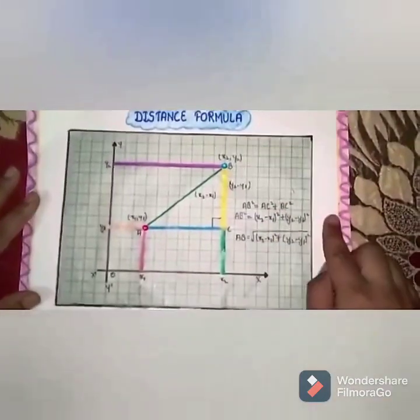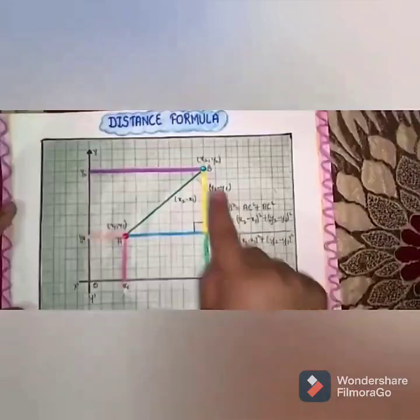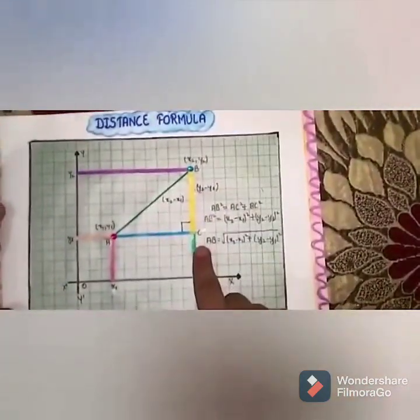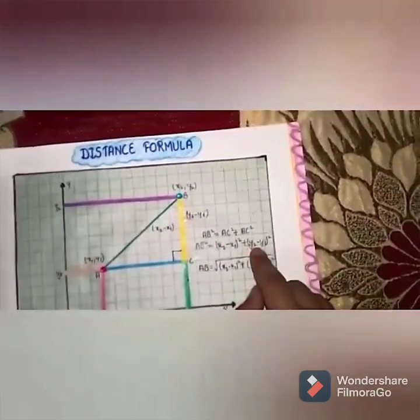Distance can be calculated by Pythagoras theorem. According to Pythagoras theorem, AB square is equal to AC square plus BC square. Fill the values: X2 minus X1 whole square plus Y2 minus Y1 whole square.